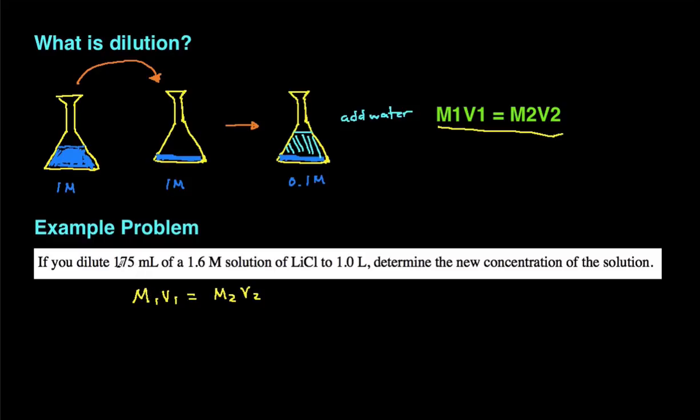We have 175 milliliters of the 1.6 molar solution, and that's going to be M1V1. So M1 is 1.6 molar and then V1 is the volume of the original solution, which is 175 milliliters. And we're trying to figure out the new concentration. So we're trying to solve for M2. M2 is going to be my unknown, I'm going to just leave it as X.